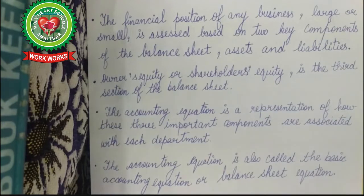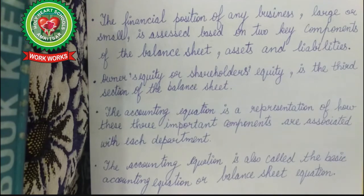Owner's equity or shareholders' equity is the third section of the balance sheet. The accounting equation is a representation of how these important components are associated with each other. The accounting equation is also called the basic accounting equation or the balance sheet equation.